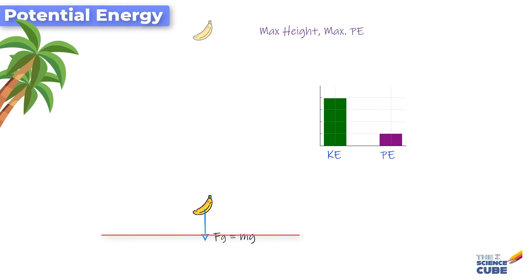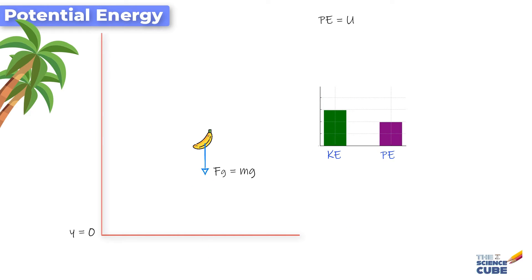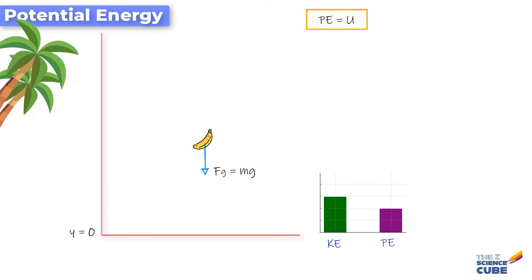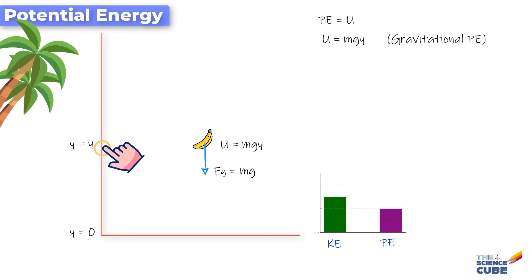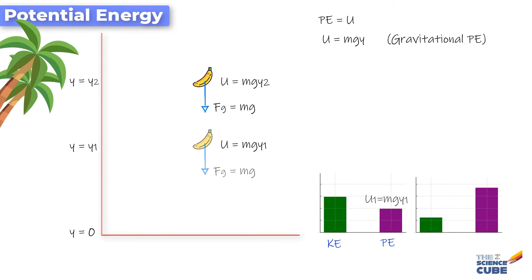By the time the banana reaches the ground, the entire potential energy has been converted into kinetic energy. If we denote the potential energy at any stage by the letter U, it can be measured as the product of mg and its position y above the origin coordinates — we call this gravitational potential energy. If the initial potential energy is mg·y1 and the final is mg·y2, the change in potential energy is ΔU = U_final − U_initial.